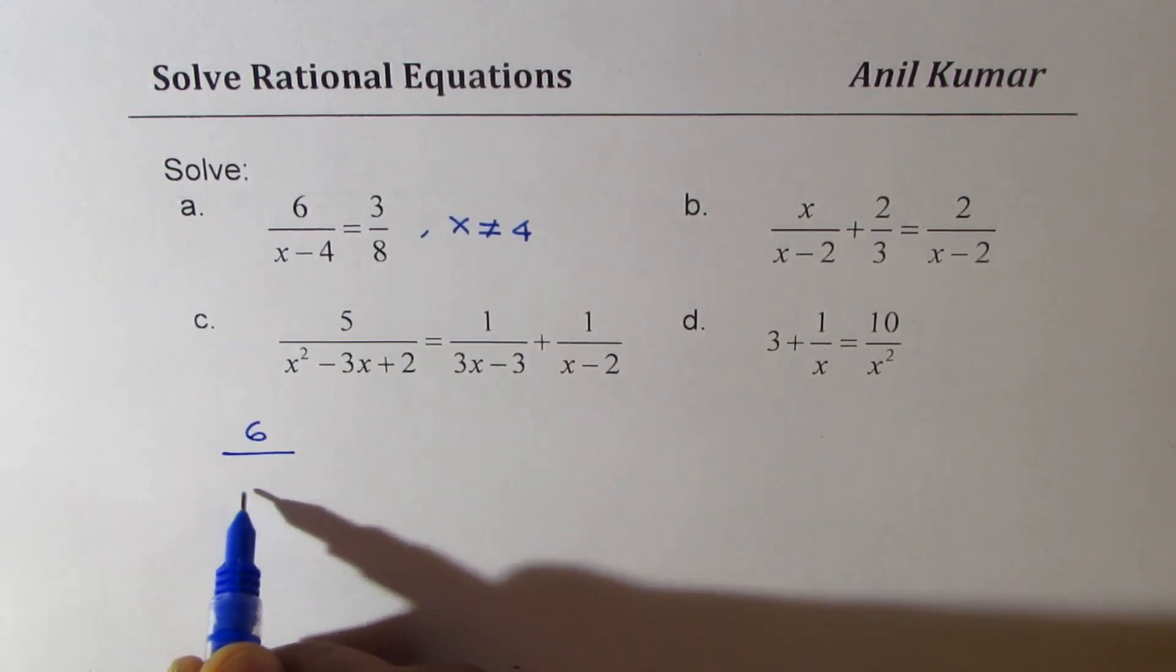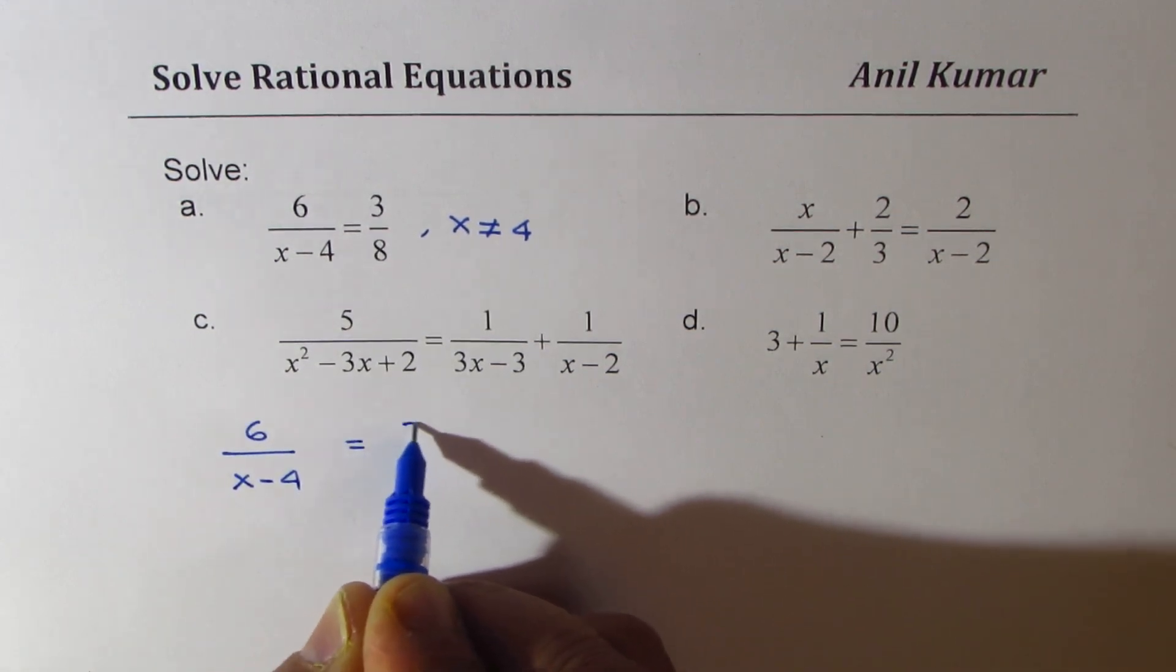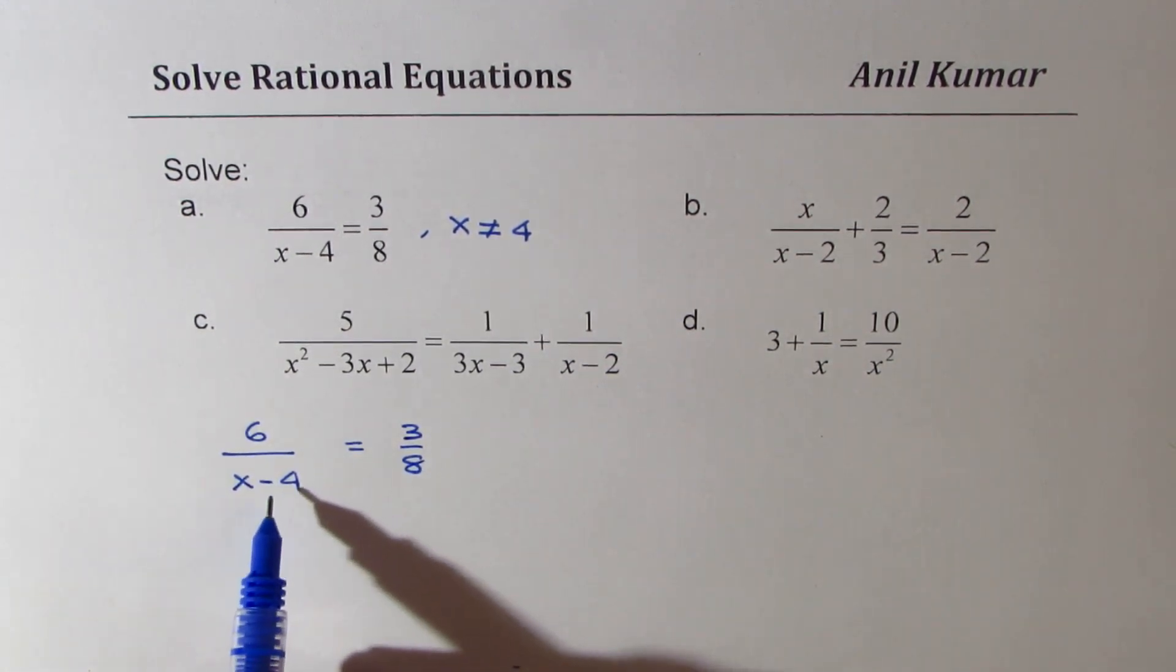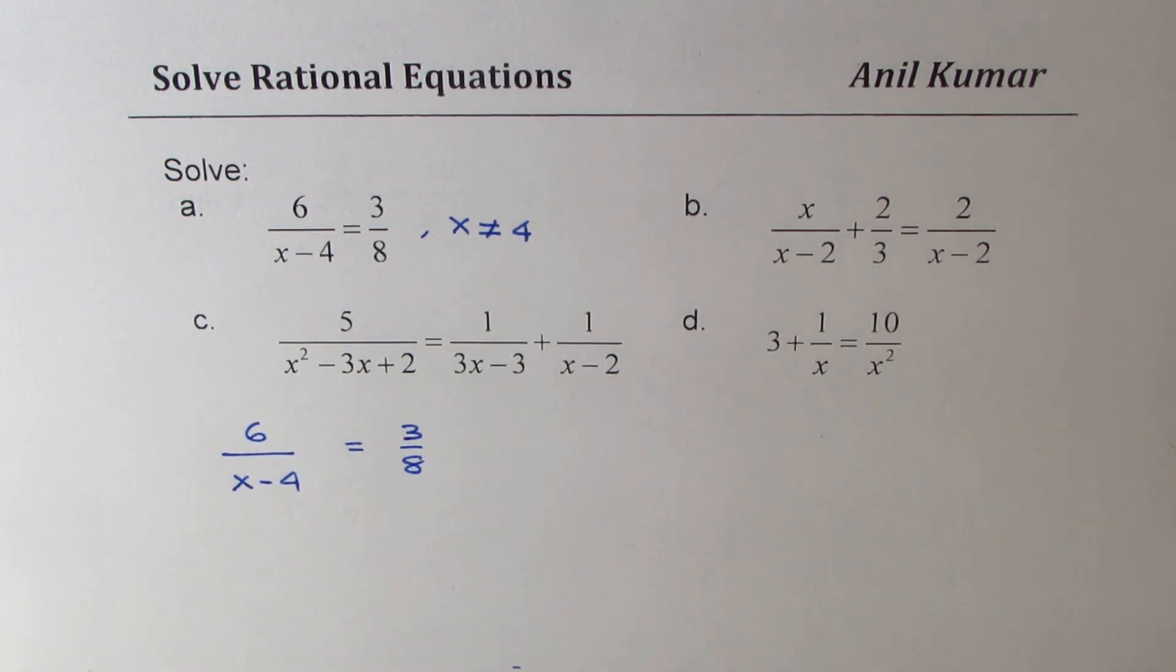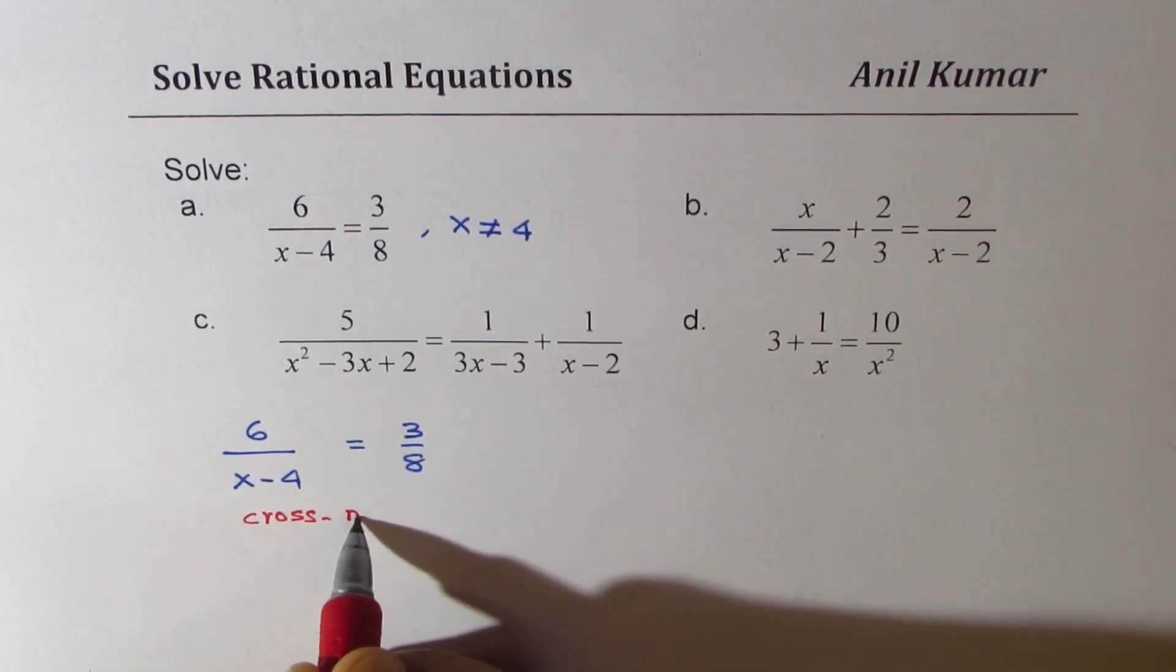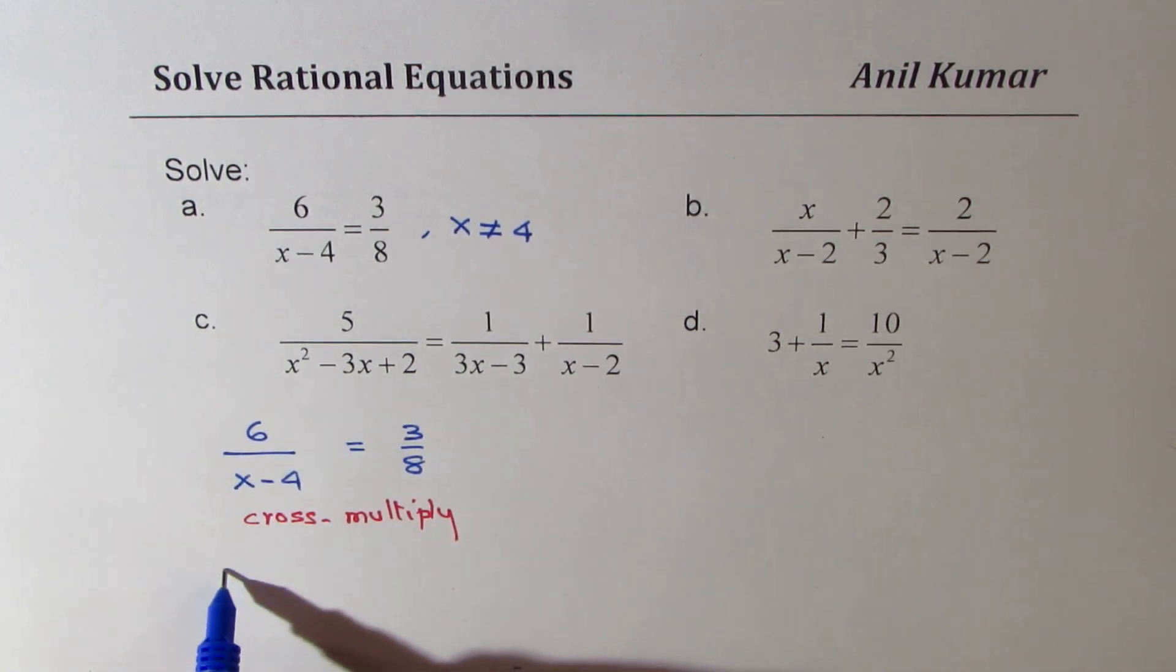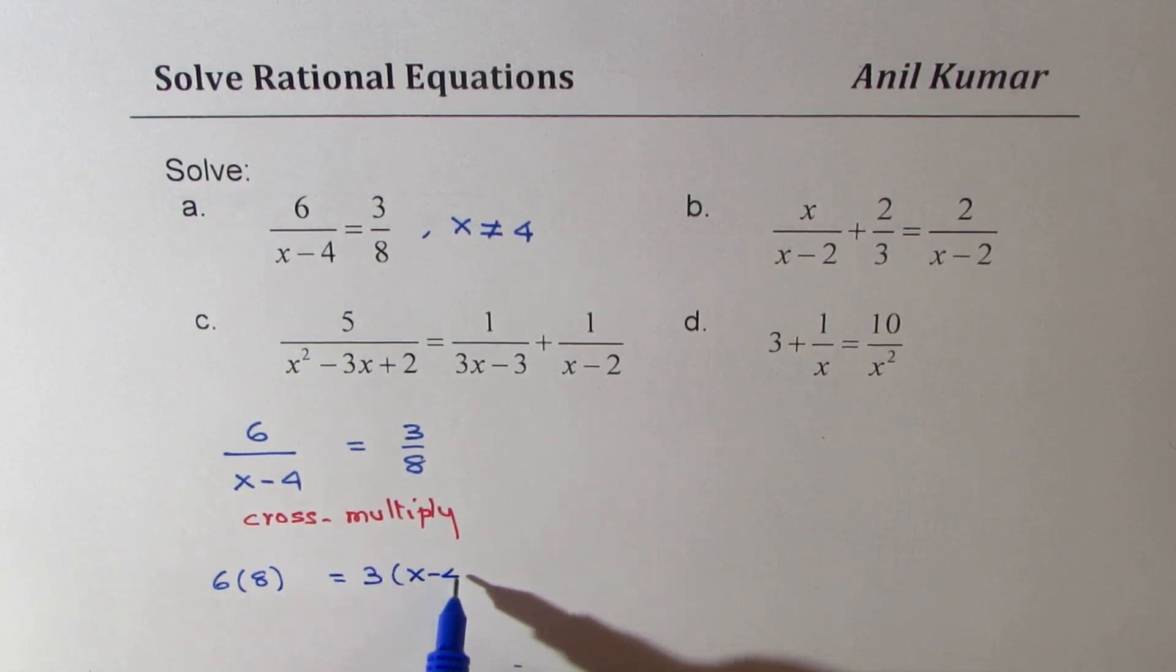We have 6 over x minus 4 equals to 3 over 8. First step is cross-multiply. Once you do that, you get 6 times 8 as 48. So let me rewrite this as 6 times 8 equals to 3 times x minus 4. Now, that gives you a linear equation.